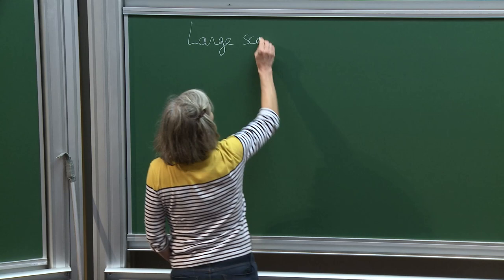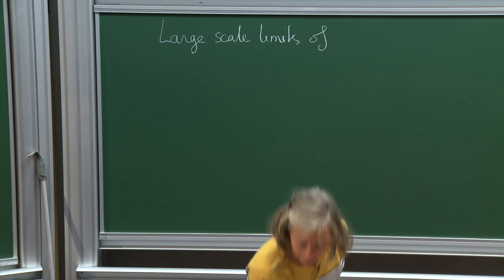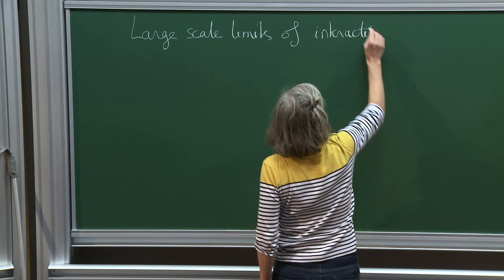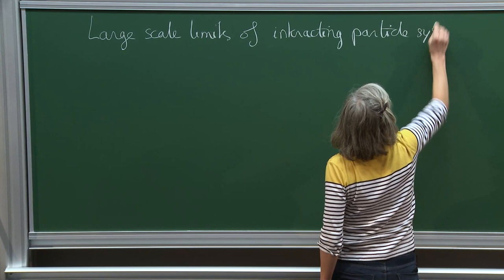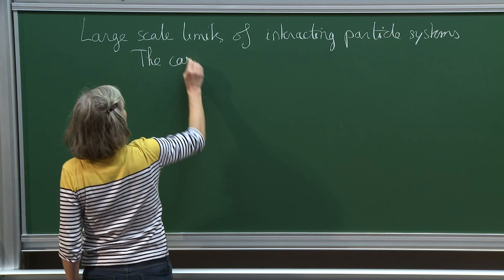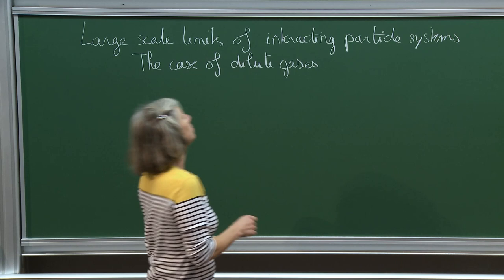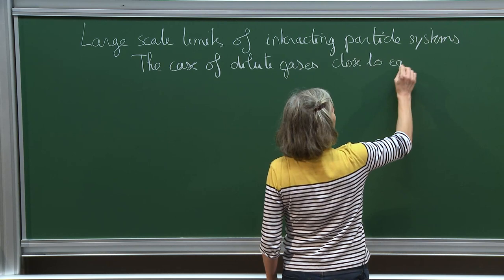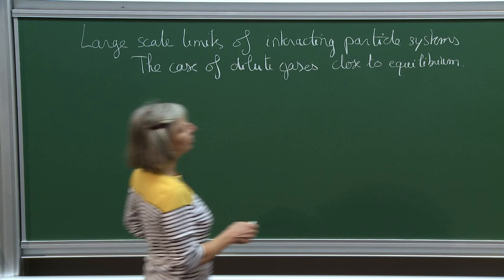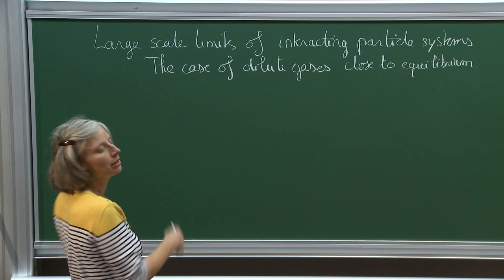The constraints of this lecture are to talk about large-scale limits of interacting particle systems. I will talk more specifically about the case of dilute gases, and I will explain what it means to be a dilute gas. I will be even more precise and look at the situation close to equilibrium — not equilibrium statistical physics, because we'll have some dynamics, but still close to equilibrium.